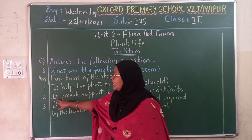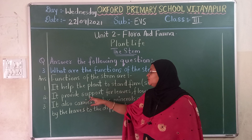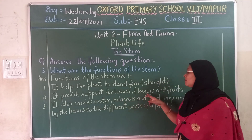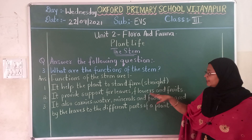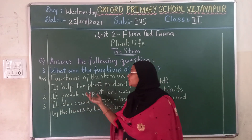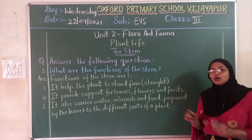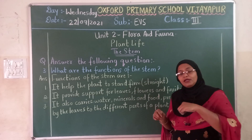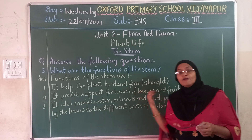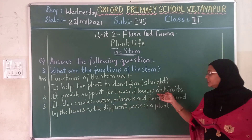Second one: it provides support for leaves, flowers and fruits. It provides P-R-O-V-I-D-E-S support S-U-P-P-O-R-T for leaves L-E-A-V-E-S, flowers F-L-O-W-E-R-S, and fruits F-R-U-I-T-S. It gives support for leaves, flowers and fruits because the stem moves upward, the leaves come up from the side, the leaves then produce flowers, and the flowers bear the fruits. So it provides support for leaves, flowers and fruits.